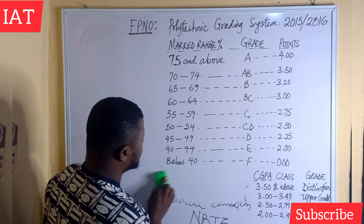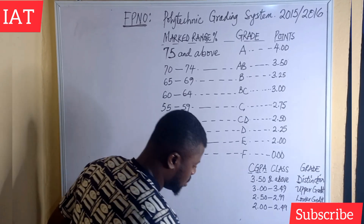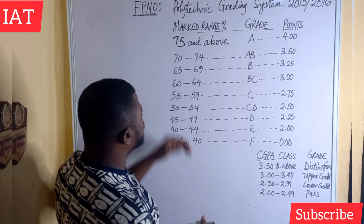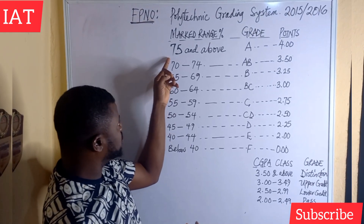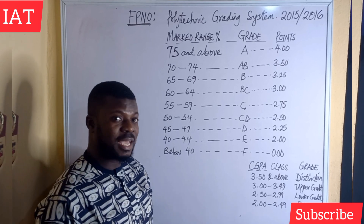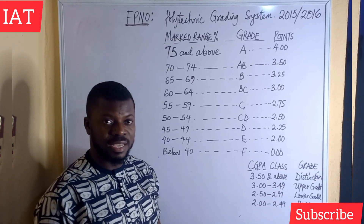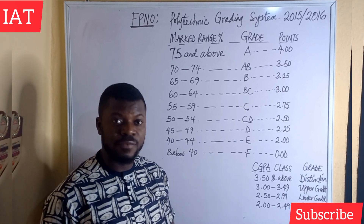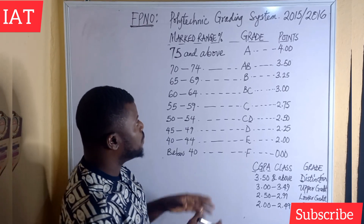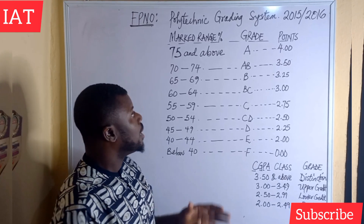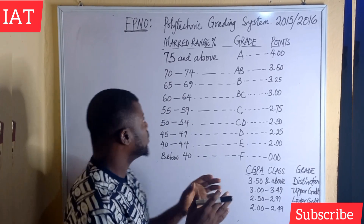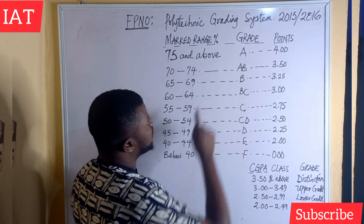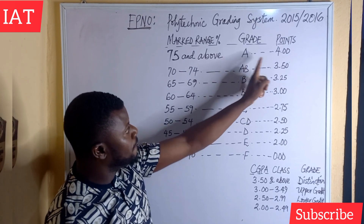The first thing I want to start with is this — you can see how I've highlighted it. This is the mark range, this is the grade, and this is the points. Before you engage in writing exams, you would have done assignments and practicals if you're in the sciences, or tests depending on your school or faculty. If after all of that your score falls within 75 to 100, your grade is A, and A means 4.00.